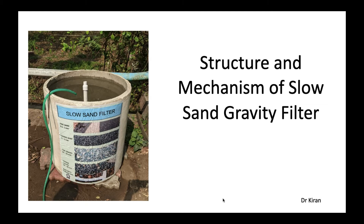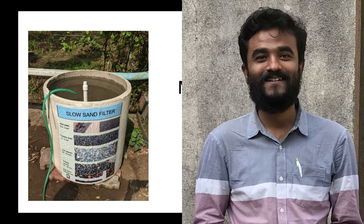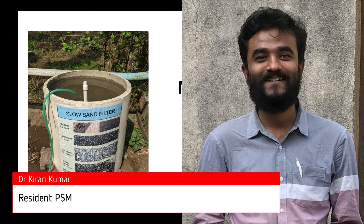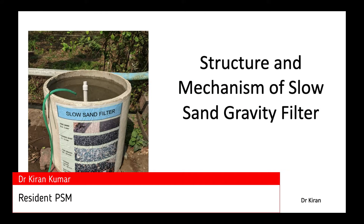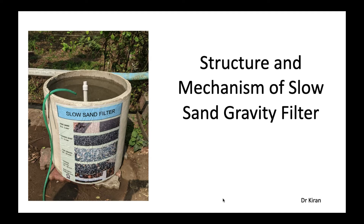Slow sand filter is a type of centralized or semi-centralized water purification system. A well-designed and properly maintained slow sand filter effectively removes turbidity and pathogenic organisms through biological, physical and chemical processes in a single treatment step. Only under conditions of high turbidity or algae contamination is pre-treatment such as sedimentation required; otherwise, water can be used directly in a slow sand filter.